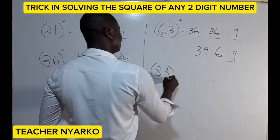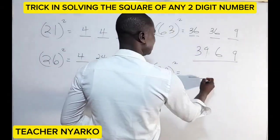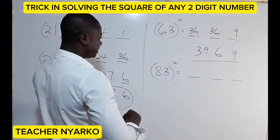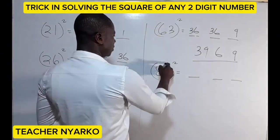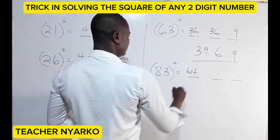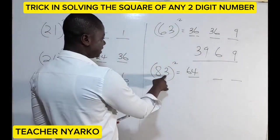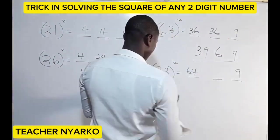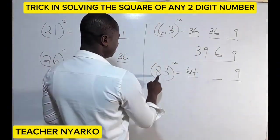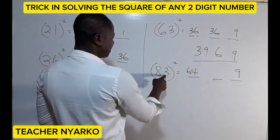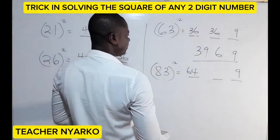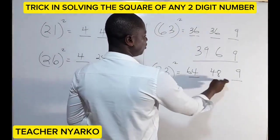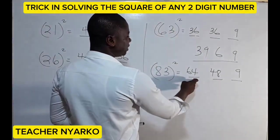Now let's take 83 squared. Split into three parts: eight squared gives us 64, which goes here. Three squared gives us nine, which goes here. Then eight times three is 24, and 24 times two gives us 48 — so we have 48 here.